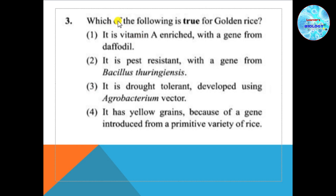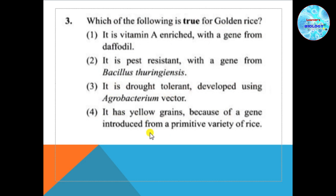Question 3: Which of the following is true for golden rice? Option 1: It is vitamin A enriched with a gene from daffodil. Option 2: It is pest resistant with a gene from Bacillus thuringiensis. Option 3: It is drought tolerant developed using Agrobacterium vector. Option 4: It has yellow grains because of a gene introduced from a primitive variety of rice.